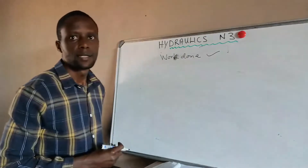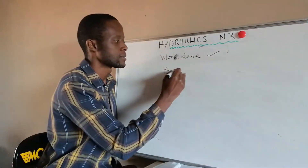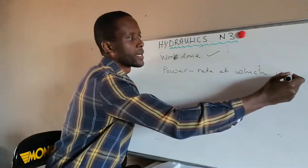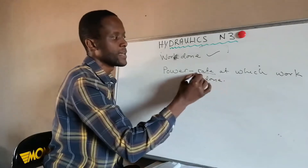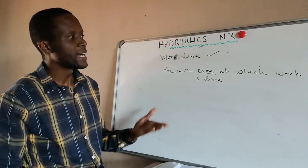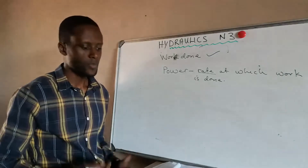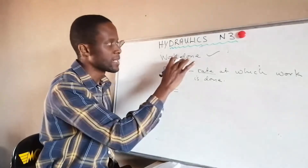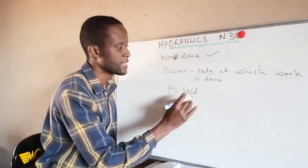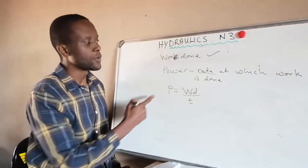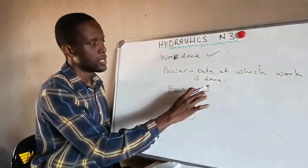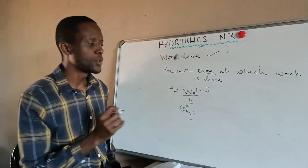If we can figure out work done, we can also figure out power. Power is the rate at which work is done — or work done per unit time. Power = Work done / Time. Your time should always be in seconds, and work done in joules, so make sure to convert time to seconds when calculating power.